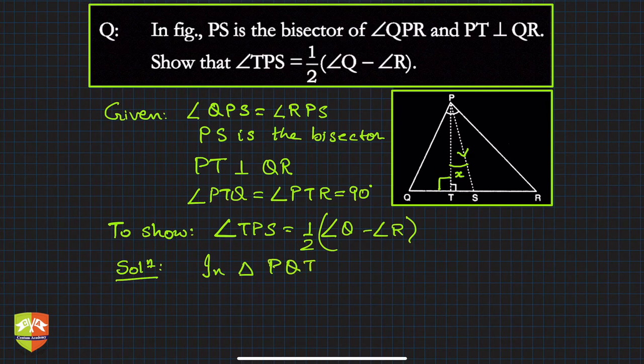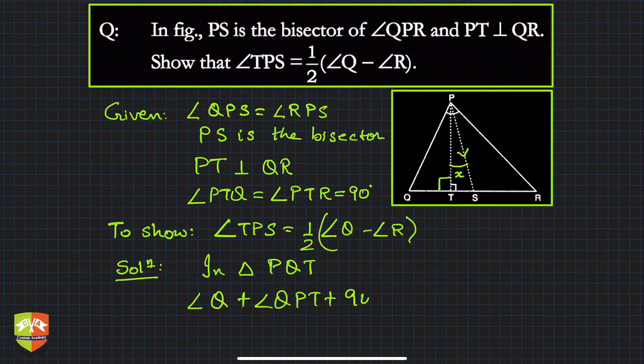So let's say in solution, okay, in triangle PQT—right angle PQT or I'm simple—right angle.